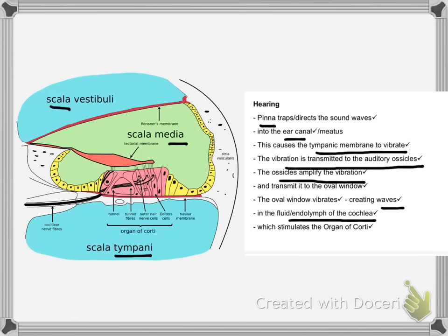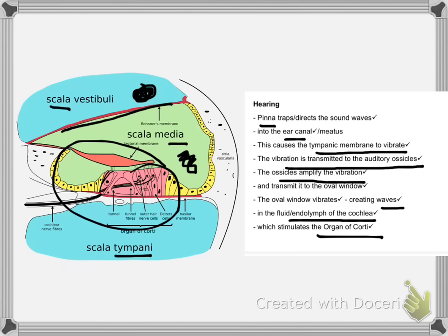The fluid in the top canal causes a membrane to vibrate. That membrane causes the endolymph inside the most inner canal to move, which then stimulates the organ of Corti. The organ of Corti is the most important structure here — it converts pressure waves into electrical impulses. Any excess sound waves not absorbed by the organ of Corti move into the lower membrane and canal, exiting through the round window.